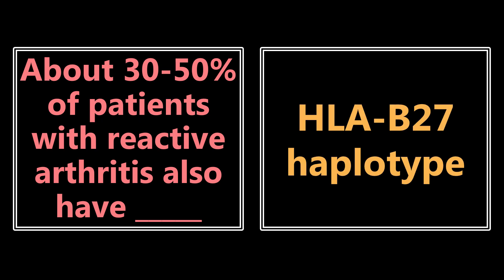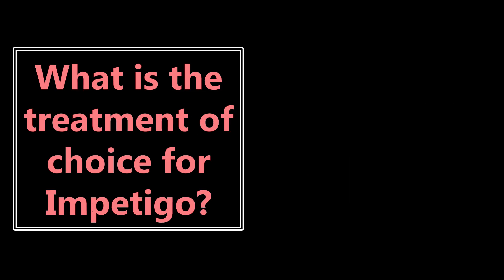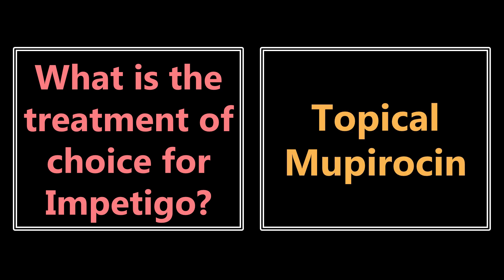About 30 to 50% of patients with reactive arthritis also have the HLA-B27 haplotype. There are a couple of different diseases associated with this, but reactive arthritis is one of the important ones you need to know. Also, the treatment of choice for impetigo is going to be topical mupirocin — not oral or anything else. It's topical mupirocin for impetigo.